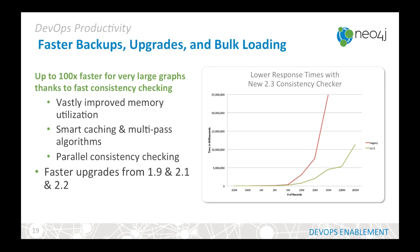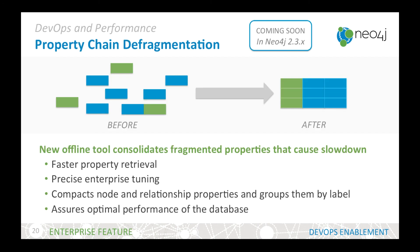We've also improved the performance of backups, upgrades, and bulk loading of your data by improving the consistency checking. And coming soon in another dot release in the Neo4j 2.3 series, we are going to be defragmenting property chains using an offline tool which moves fragmented properties into a consolidated store. This increases the speed of property retrieval and provides enterprise tuning functionality.